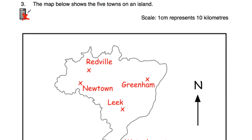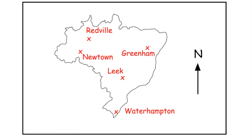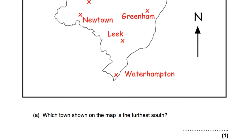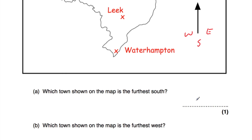Question number three: the map below shows five towns and an island. We've got Redville, Newtown, Greenham, Leake, and Waterhampton, and we're told north is going up. The scale is one centimeter represents 10 kilometers. Part A says which town is the furthest south? Further south would be Waterhampton.